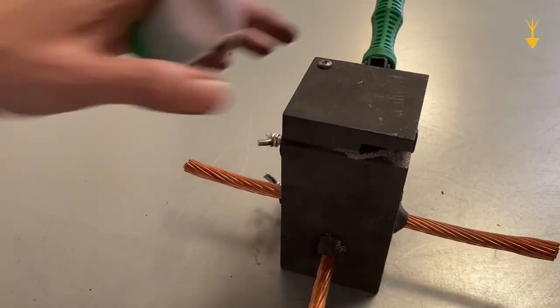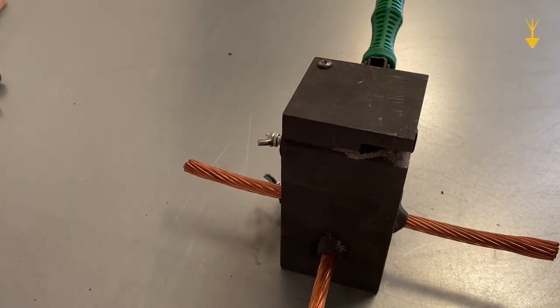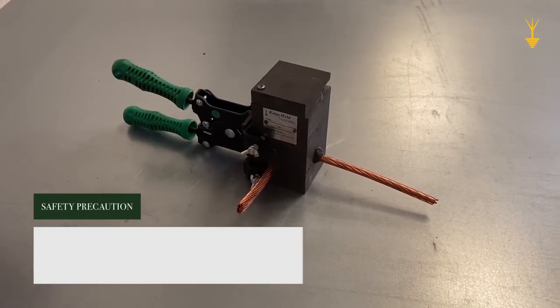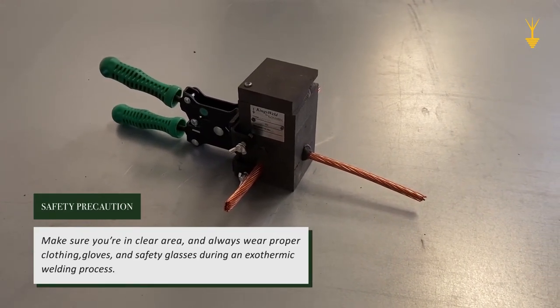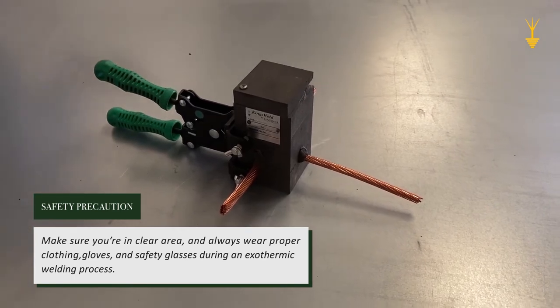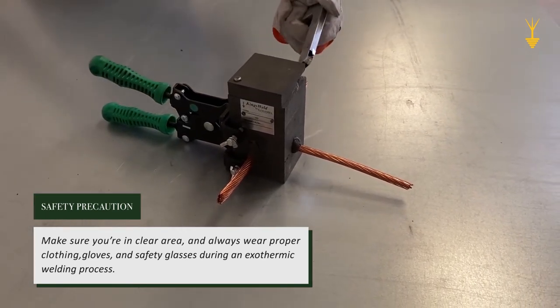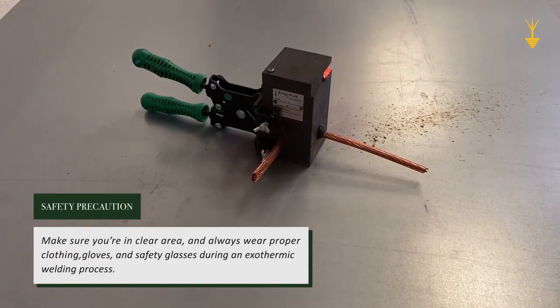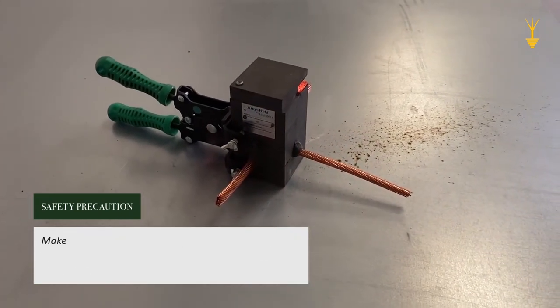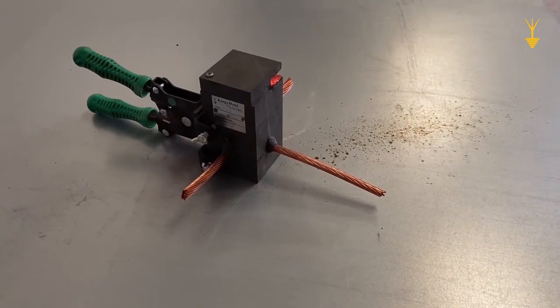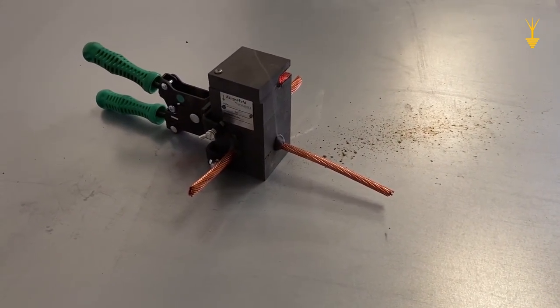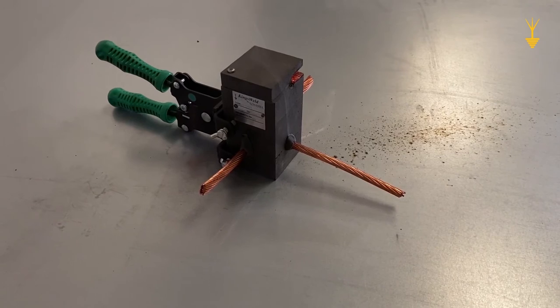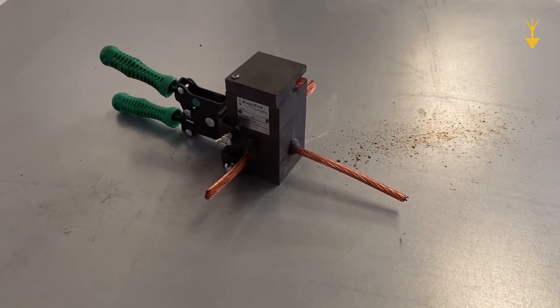So, now, we're ready to light the fuse. Now, make sure that your surrounding area is clear, and that you've got your safety gear on, and then go ahead and spark the ignition using a flint gun. Now, the reaction will go off. Let the mold sit for about 20 seconds, and then open the mold, and we'll go from there.